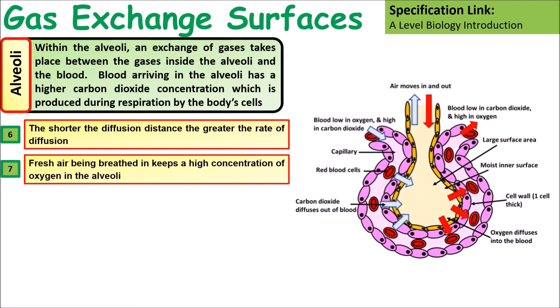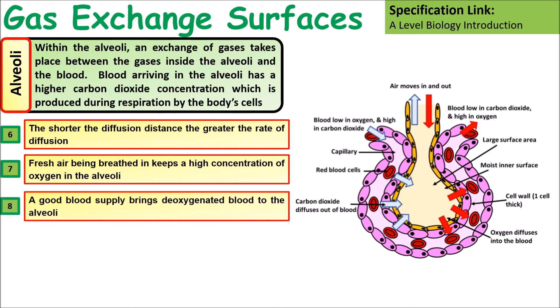Fresh air is being constantly breathed into the lungs, and air that has had carbon dioxide diffused back into it is being constantly breathed out. This also helps maintain a concentration gradient. There is a good blood supply, so oxygen is taken away quickly and carbon dioxide is brought to the alveoli, therefore maintaining that concentration gradient.